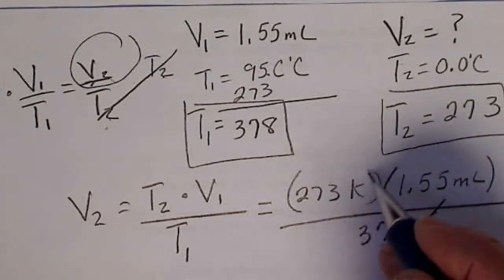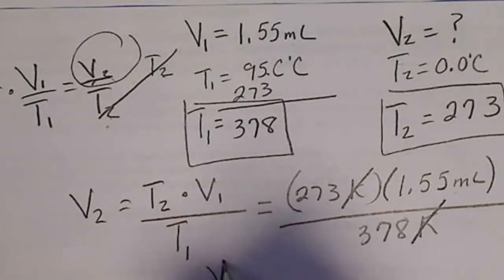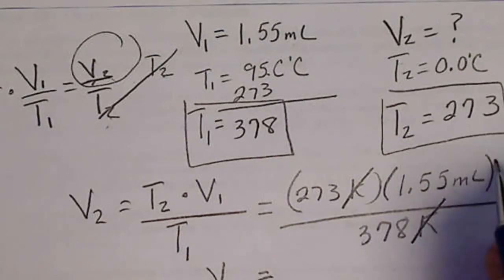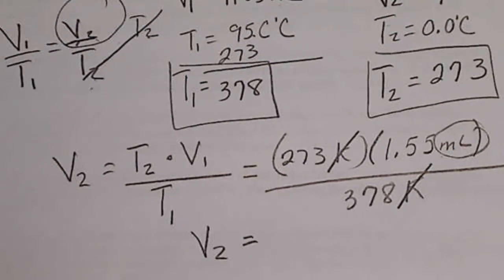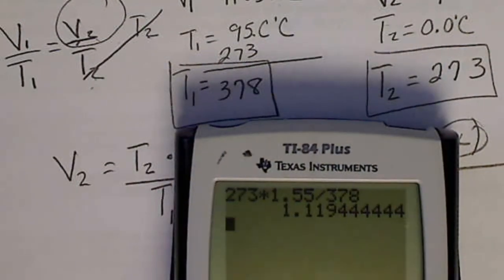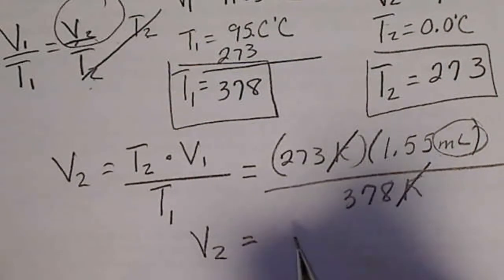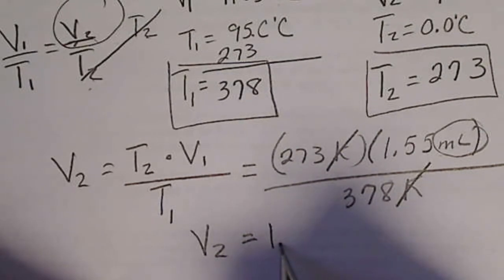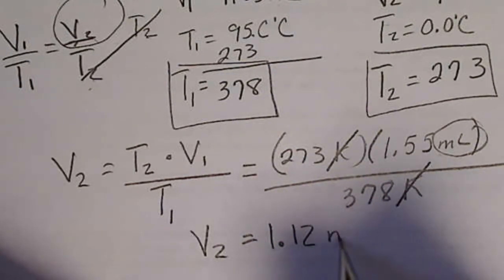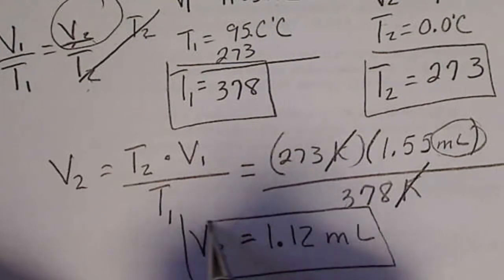And again, our Kelvin units are going to cancel, so V2 is going to be in milliliters. And we just do that multiplication there, 273 times 1.55 divided by 378. And when we do that calculation, I'm going to round this to 1.12 milliliters. We'll stick with three significant figures. So 1.12 milliliters would be the final volume.